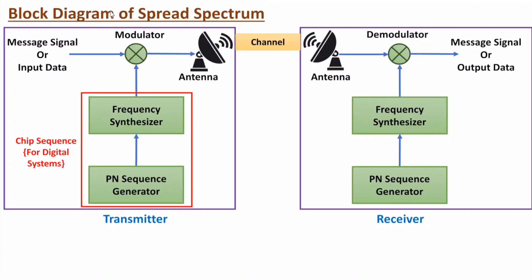Looking at the transmitter block diagram: we have the message signal with narrow bandwidth, which is given to a modulator — also referred to as a spreader. After modulation we have wider bandwidth, which is given to the antenna and transmitted over the wireless channel. The second input to the modulator is a frequency synthesizer, whose frequency depends on input from a PN sequence generator. The PN sequence generator gives a code to the frequency synthesizer, which generates the carrier frequency, and the modulated signal is transmitted.